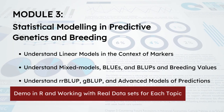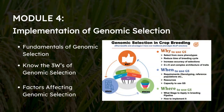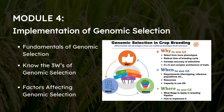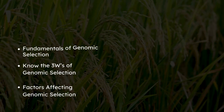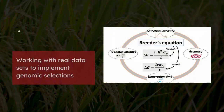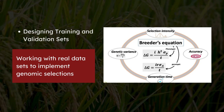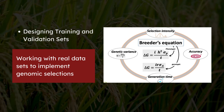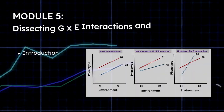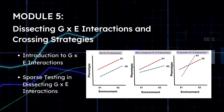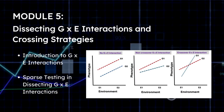In module four, you will explore the implementation of genomic selection. In module five, you will learn about dissecting gene-environment interactions and crossing strategies.